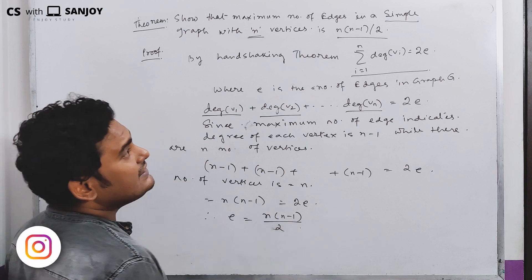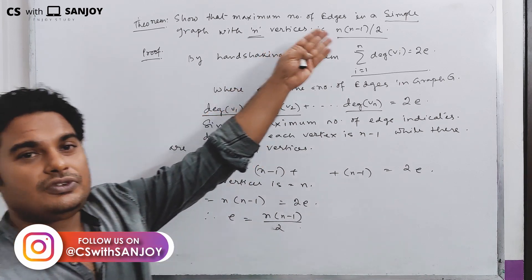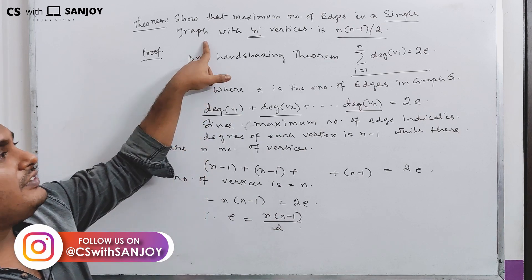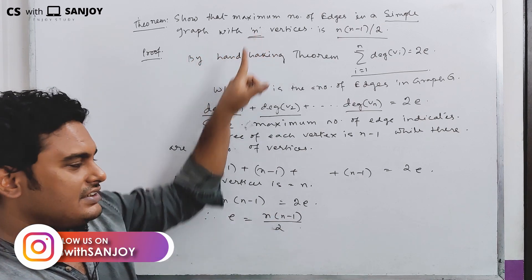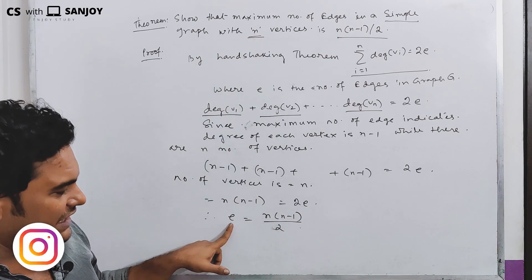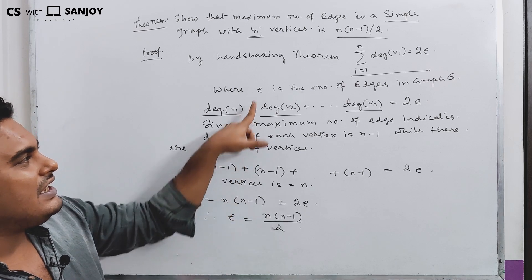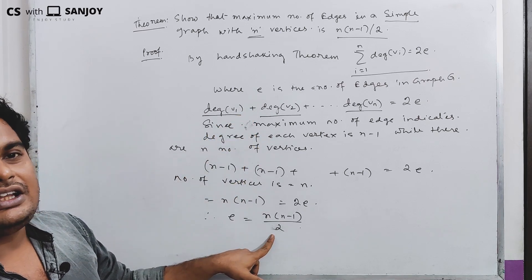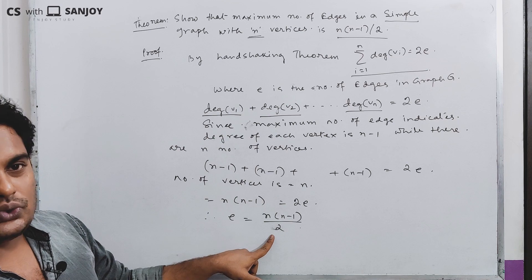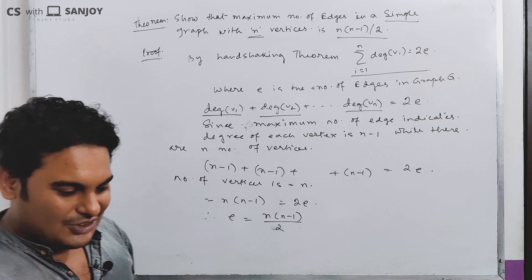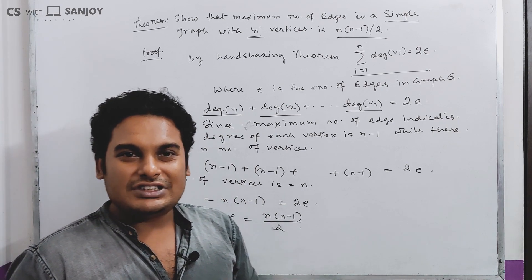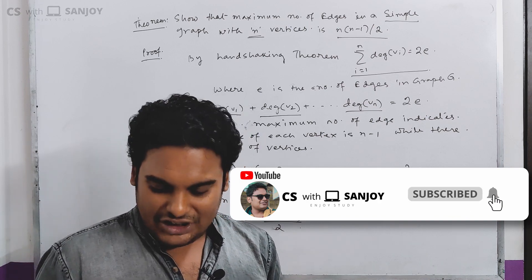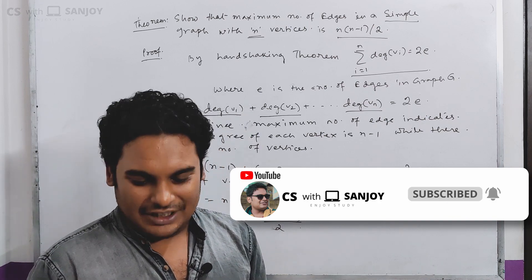Hence we have proved it: if there are n vertices, then the maximum number of edges e will be n(n-1)/2. Hence the proof is complete. Thank you for watching — keep watching our videos and like, share, and subscribe.